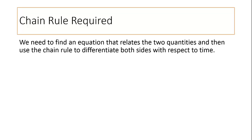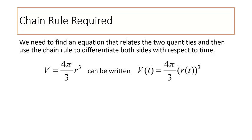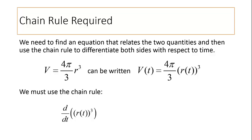We need to find an equation that relates the quantities and then use the chain rule to differentiate both sides with respect to time. For our balloon, we can use the formula: volume equals 4/3 π times the radius cubed. If we want to emphasize that the volume and radius are changing with respect to time, our formula can be written v(t) equals 4/3 π times r(t) cubed. Since these are functions of time, we must use the chain rule to differentiate. For example, to compute the derivative of r cubed, we think of it as r(t) raised to the third power, and our derivative will be 3 times r(t) squared times the derivative of that inside function, dr/dt. That's enough preliminaries — let's get to an example.